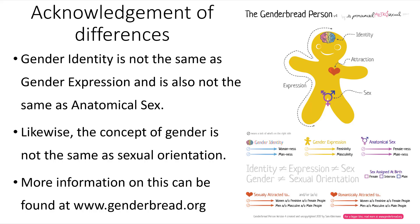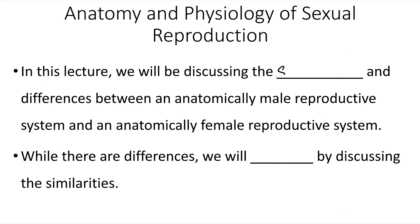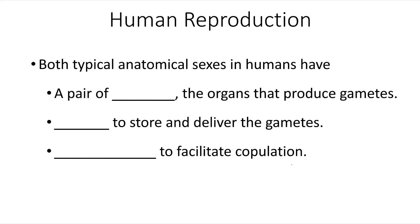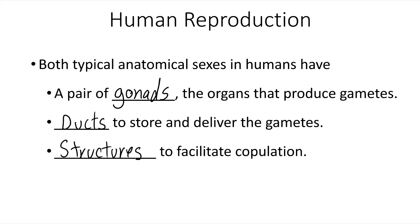In this lecture we will be discussing the similarities and differences between an anatomically male reproductive system and an anatomically female reproductive system. While there are differences, we will start by discussing the similarities. Both typical anatomical sexes in humans have a pair of gonads, which are the organs that produce gametes, ducts or tubes to store and deliver the gametes, and structures to facilitate copulation or sexual intercourse.